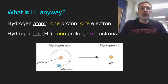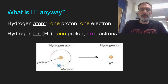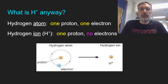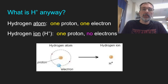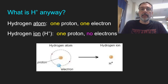So what do we mean by H+ anyway? If a hydrogen atom has one proton and one electron, they cancel each other out — neutral charge. If it has a plus charge, it lost an electron. Hydrogen is in group one and likes to lose electrons. So a hydrogen ion is made of one proton and no electrons. In other words, another word for H+ ion is simply a proton.